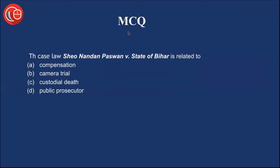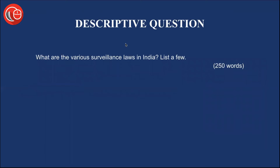Let's see what the multiple choice question from yesterday's discussion was. The case law Sheo Nandan Paswan versus State of Bihar is related to — your options are: compensation, camera trial, custodial death, or public prosecutor. If you know the answer, put it down in the comment section below. The descriptive question for the day is: what are the various surveillance laws in India? List a few.